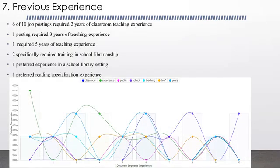The previous experience requirements were somewhat consistent. Six of ten job postings required two years of classroom teaching experience. One posting required three years and one required five years of teaching experience. Two specifically required training in school librarianship, one preferred experience in a school library setting, and one preferred reading specialization experience. Overall, what this trend suggests is that in order to become a school librarian you must have at minimum two years of classroom teaching experience, although more is desired, and you must have some training in school librarianship, ideally with some experience in literacy or in a school library setting.